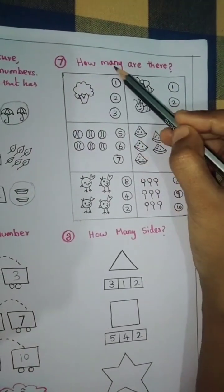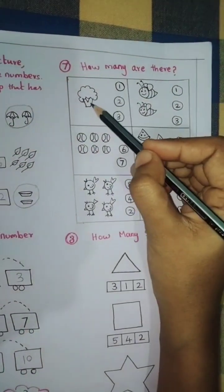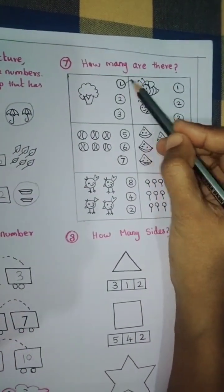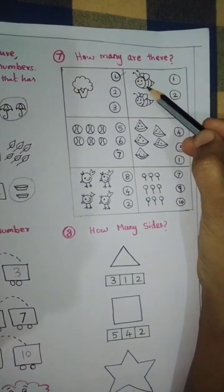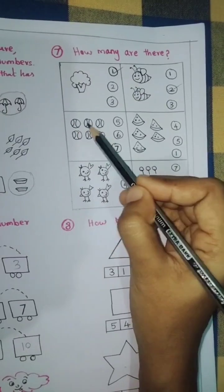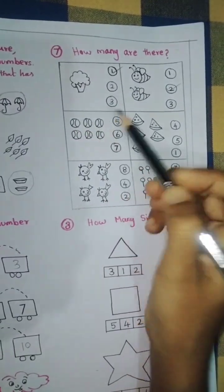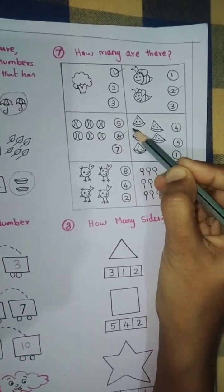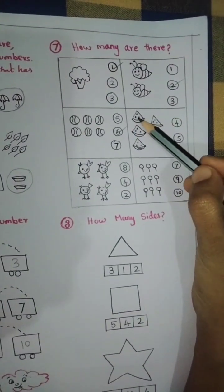7, how many are there? First, broccoli. Only one broccoli, tick number 1. Second, bees. 1 and 2, tick number 2. 1, 2, 3, 4, 5, 6 balls. Tick 6.